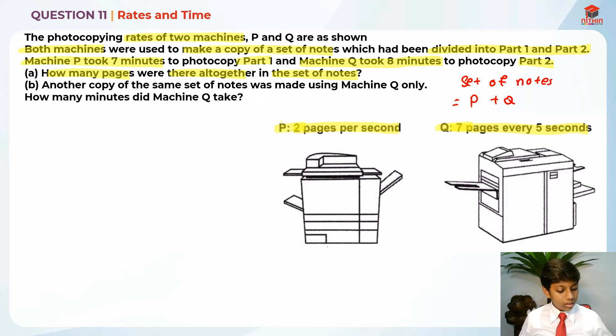In order to find the total number of pages in the set of notes, it's basically set of notes equals P plus Q, which is 7 minutes and 8 minutes. So this is basically what we need to find. First, let's move on to finding P. So P took 7 minutes, and we know 1 minute is equal to 60 seconds.